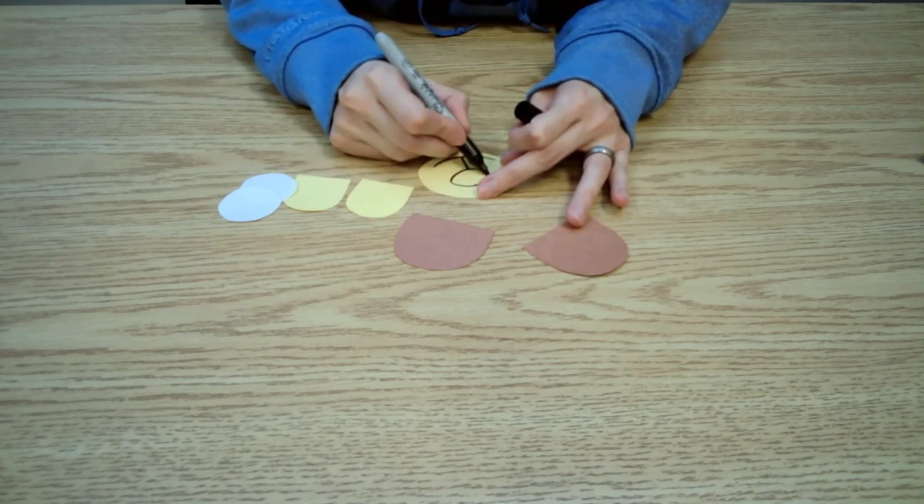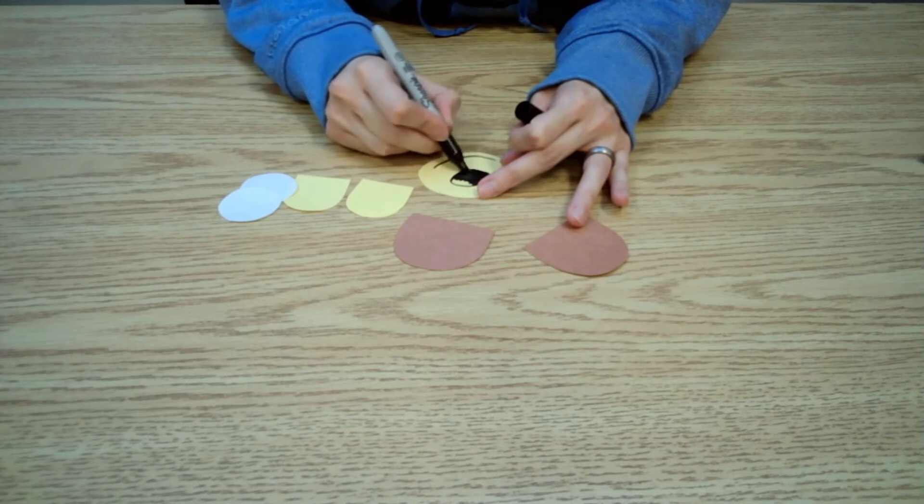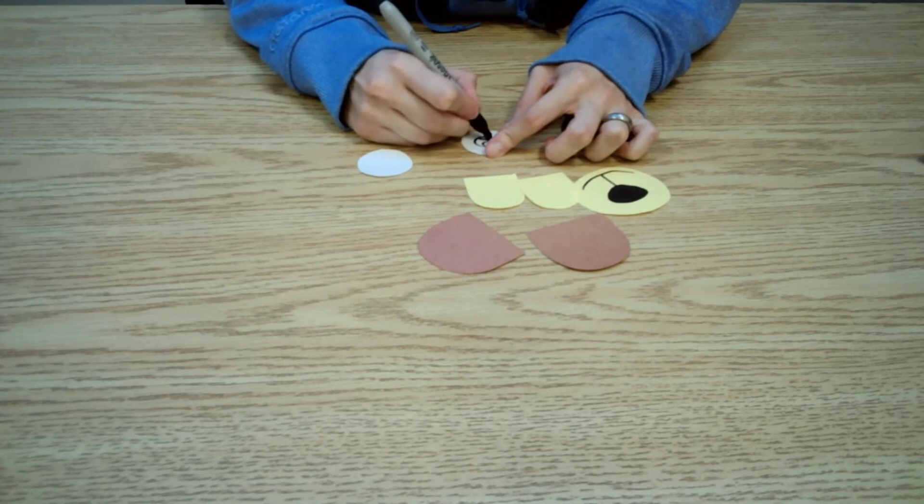Now that you have all your shapes cut out, draw in details like a nose, some eyes, whatever you like.